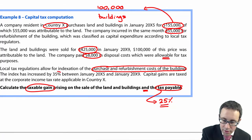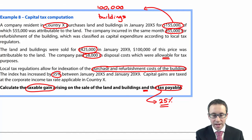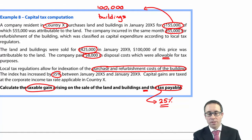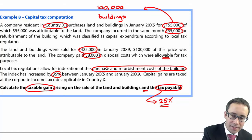The costs are increased by 35%. Capital gains are taxed at the corporate income tax rate applicable in country X. Let's work through the computation.